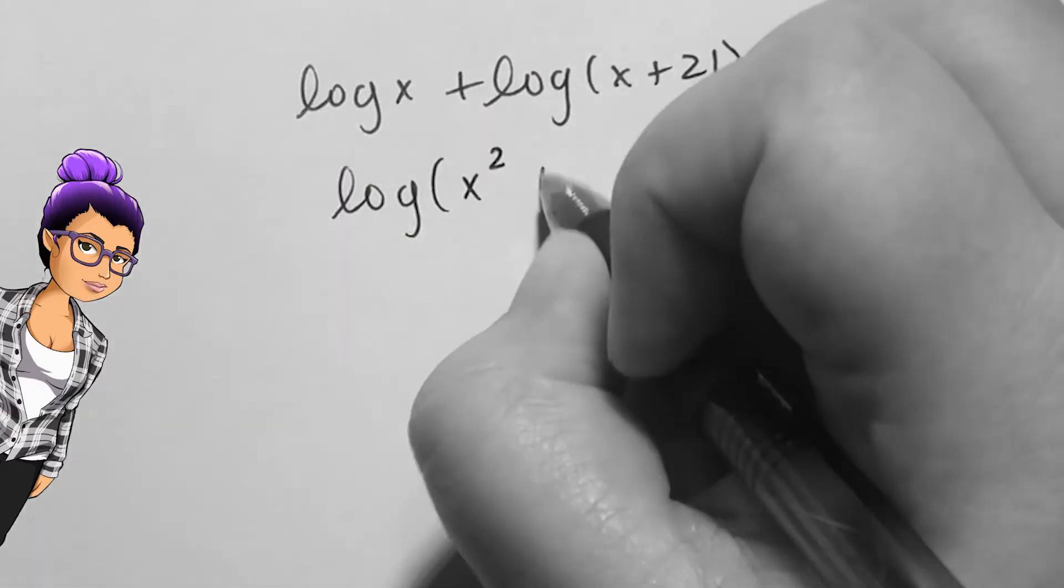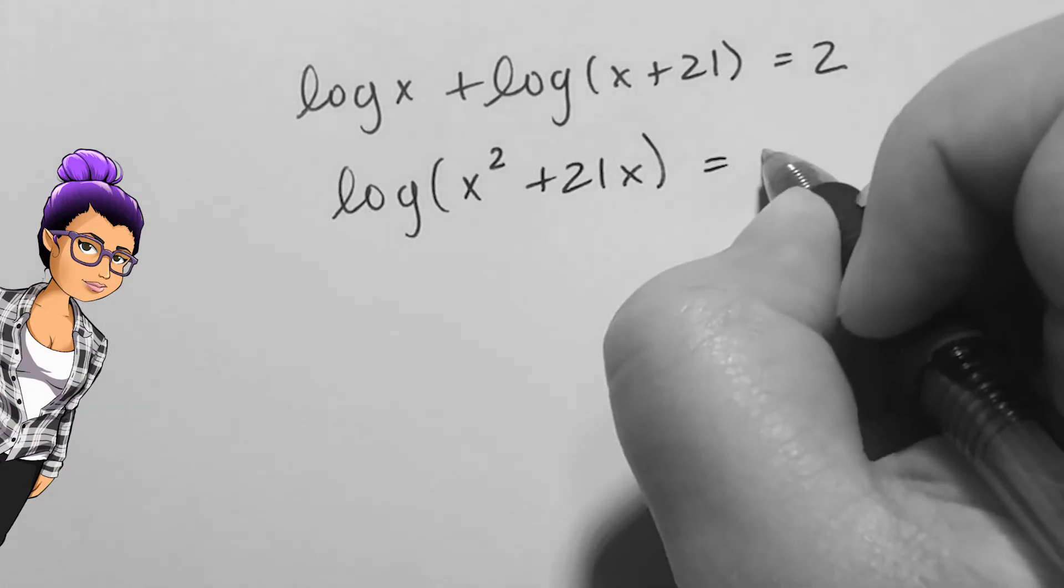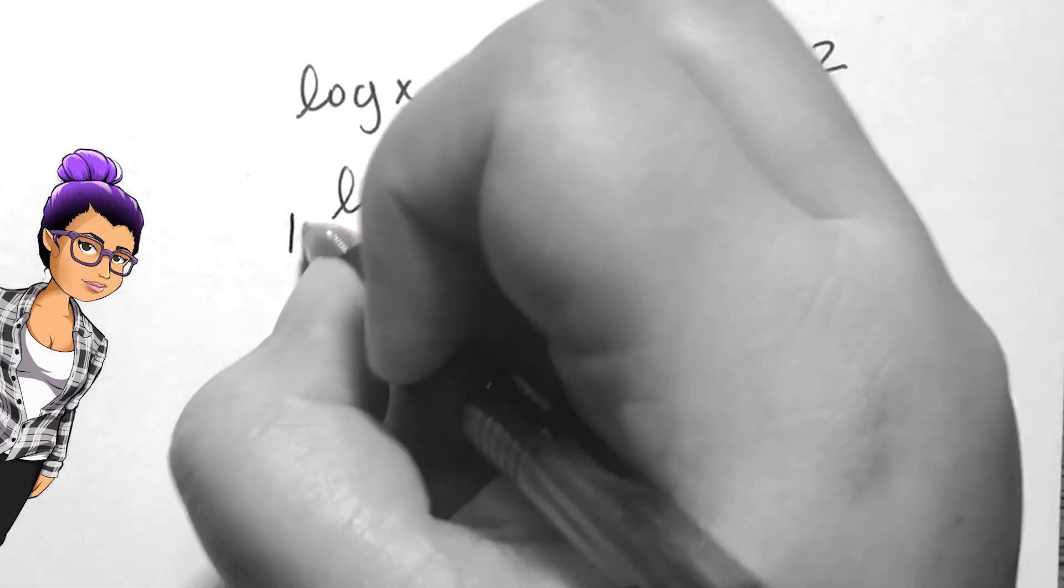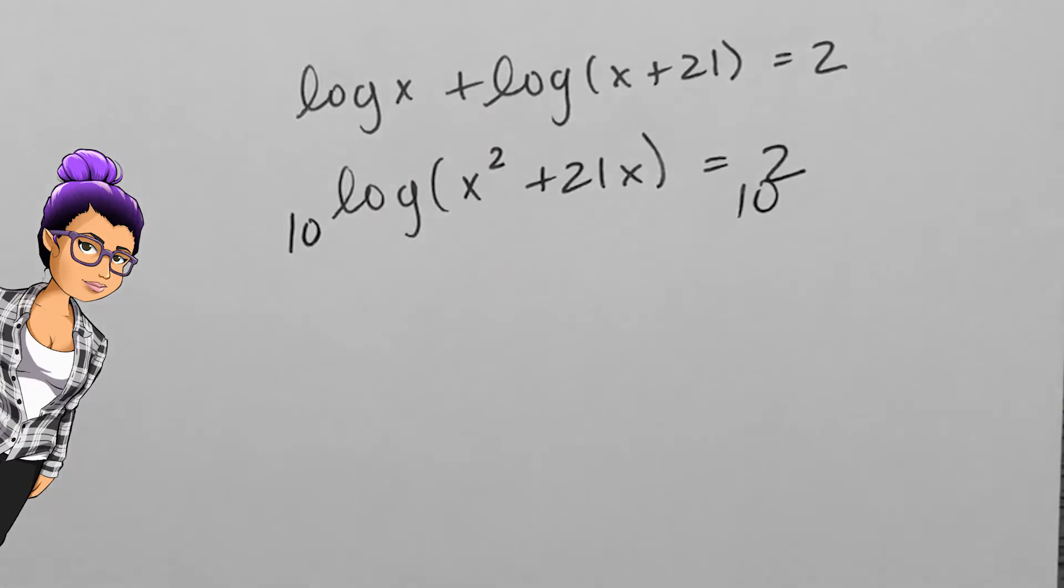I can use the product rule to condense this side into one log, so my equation says common log of x squared plus 21x equals 2.